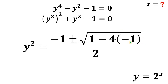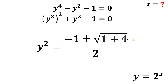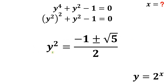Simplifying: negative 4 times negative 1 is positive 4, and 1 plus 4 equals 5. So y squared equals negative 1 plus or minus square root of 5, all over 2. Since y is greater than 0, y squared is also greater than 0, so we cannot take negative 1 minus square root of 5 over 2, as that is negative. Therefore, y squared equals negative 1 plus square root of 5, all over 2.